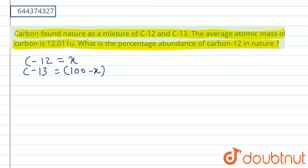The average atomic mass equals the molecular mass of one isotope, which is 12, multiplied by its abundance x, plus the molecular mass of the other isotope, which is 13, multiplied by its abundance (100 minus x), divided by the total sum of their abundances (x plus 100 minus x). We have an average atomic mass value as 12.011.